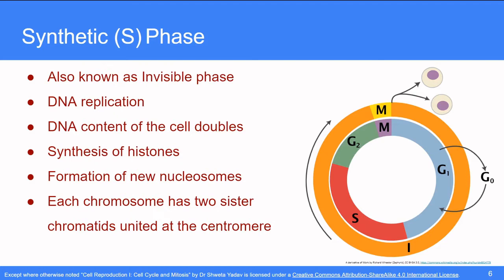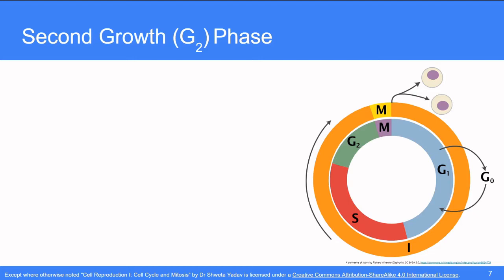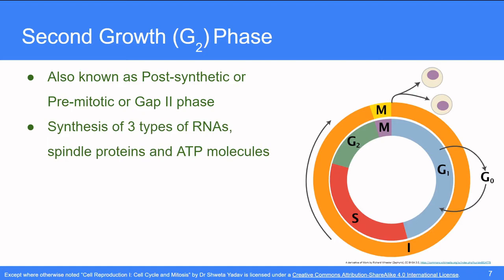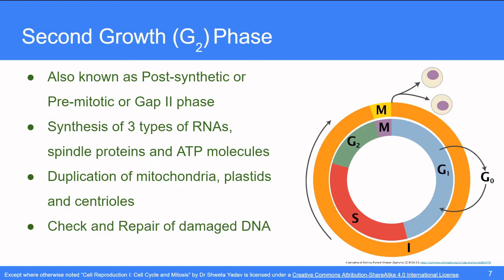The second growth phase or the G2 phase is also known as postsynthetic or pre-mitotic or the gap phase 2. It is the phase of major cytoplasmic changes as in this phase, the synthesis of three types of RNAs, R, M and T, the spindle proteins and ATP molecules takes place. The duplication of the organelles like mitochondria, plastid and centrioles too takes place here. Apart from all these changes, the DNA synthesized during the S phase is checked for damages and repaired in this stage only.